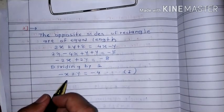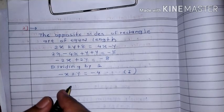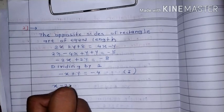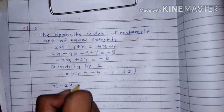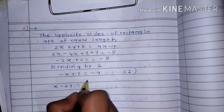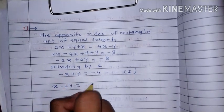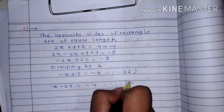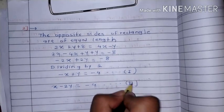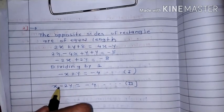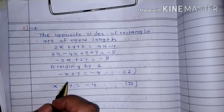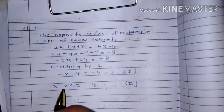The second pair of opposite sides gives x minus 2y is equal to minus 4. This is equation number 2. So add equation 1 and equation 2.